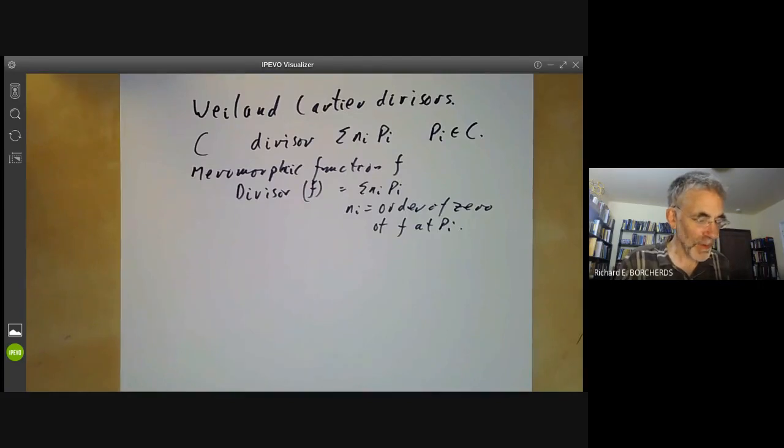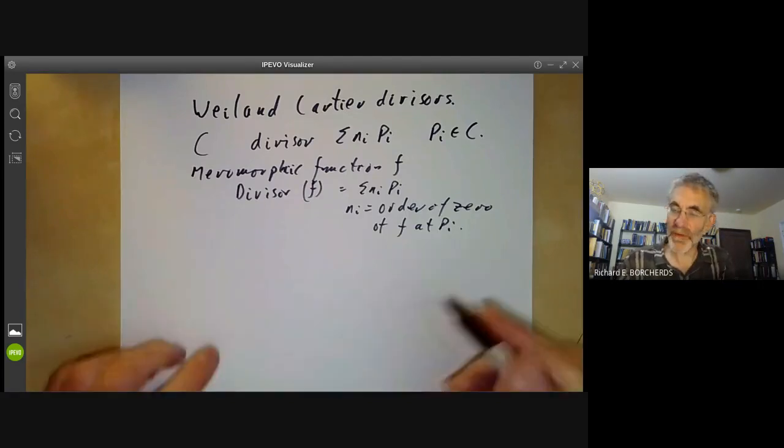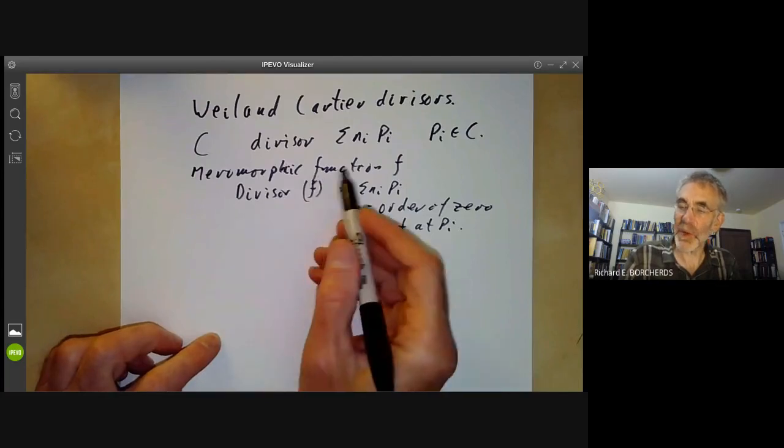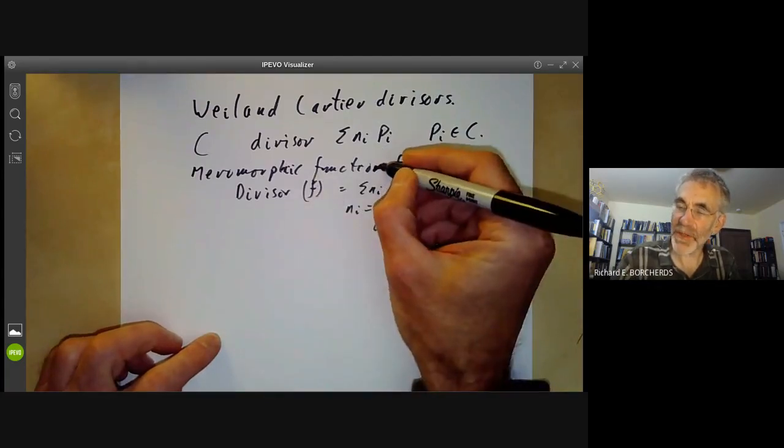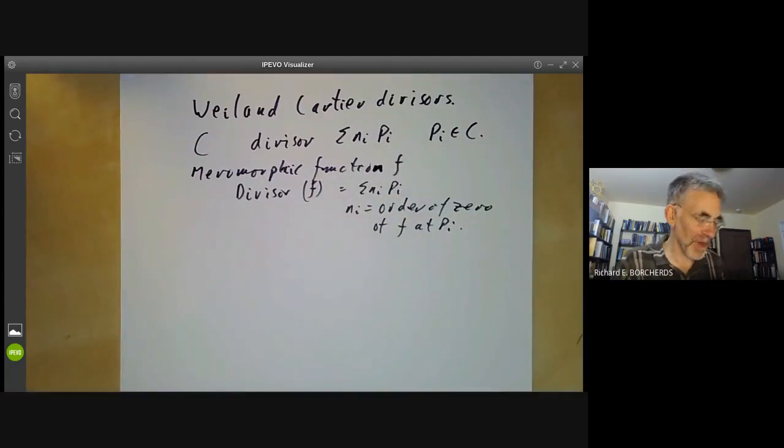What we want to do is generalize this to all varieties. We want to define divisors and have a map from meromorphic functions to divisors, whatever meromorphic functions mean.